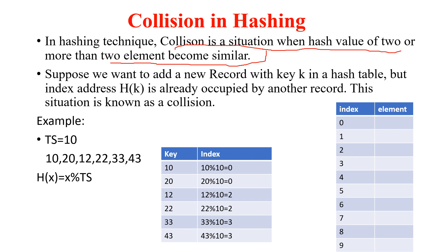Will we store those same elements in that place or not? Because we know that at one chair, a single person is going to sit — it is not possible for two persons to sit at a single chair. So suppose here I have taken the table size as 10, which means I have indexes 0 to 9. And I have also given elements: 10, 20, 12, 22, 33, 43.